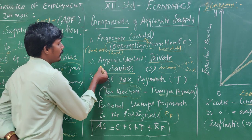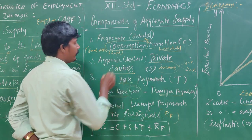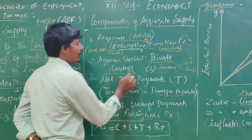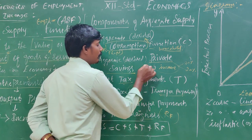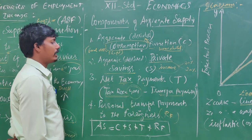The second component is aggregate desired private savings. Here, if you have savings done, it is private savings.